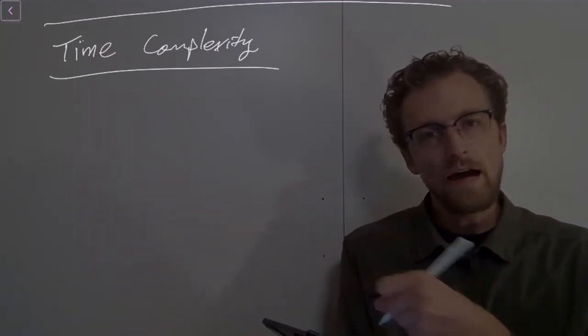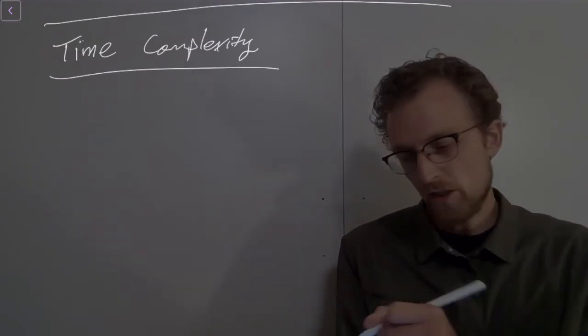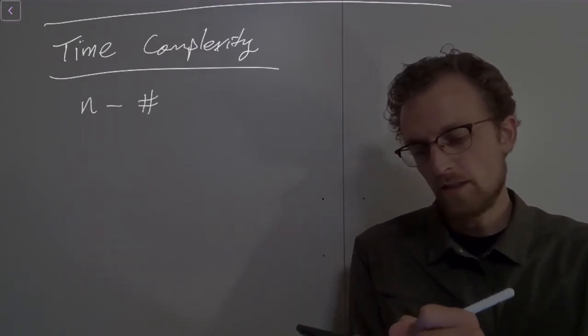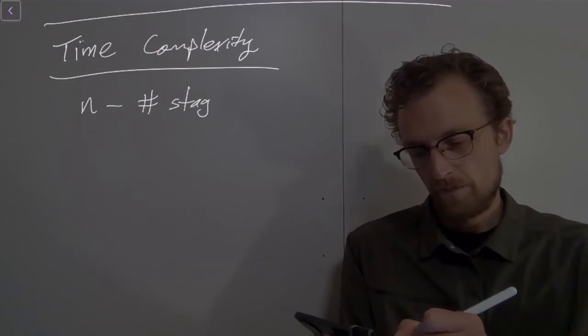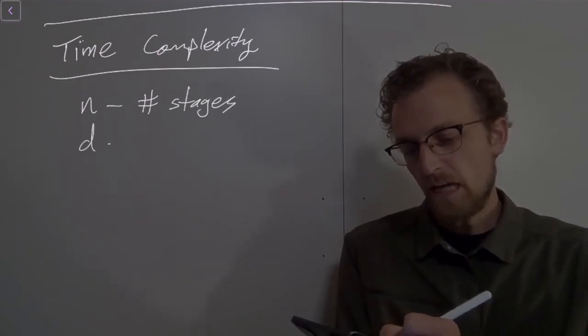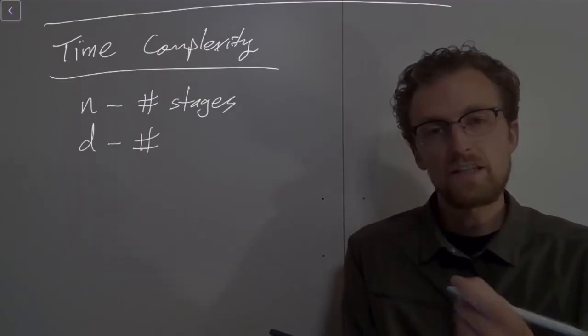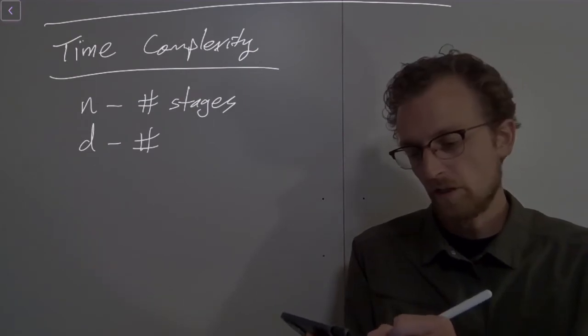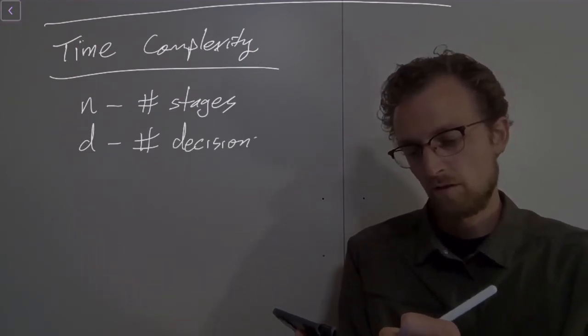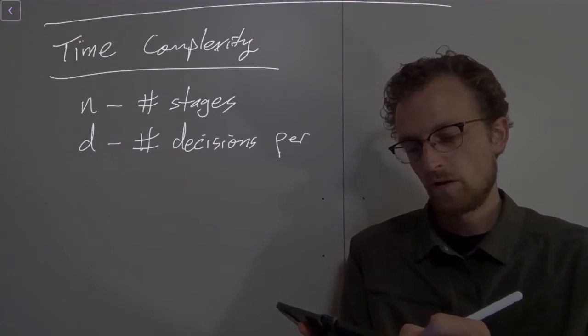We want to say, as a function of the number of stages, let's let n be the number of stages, and let's let d be the number of decisions to make at each stage. Decisions per stage.